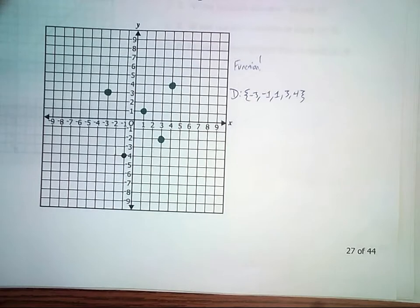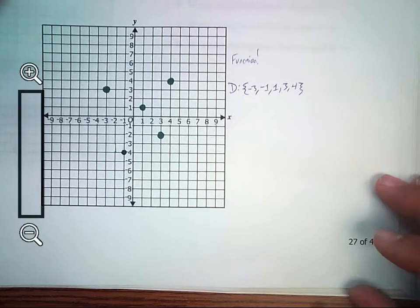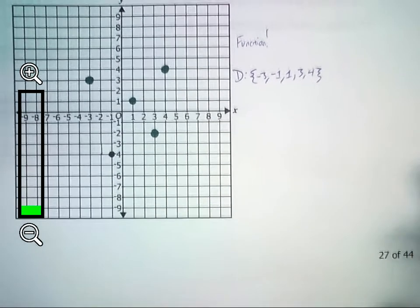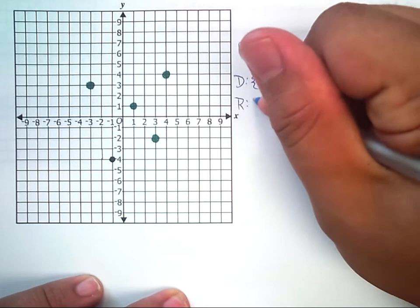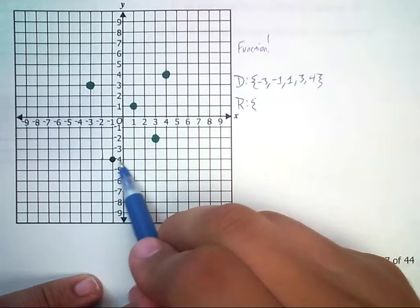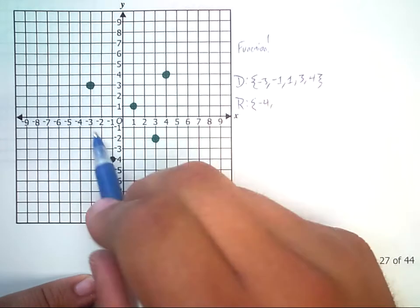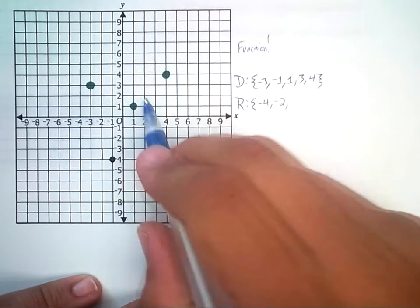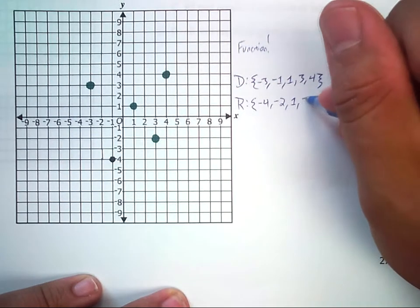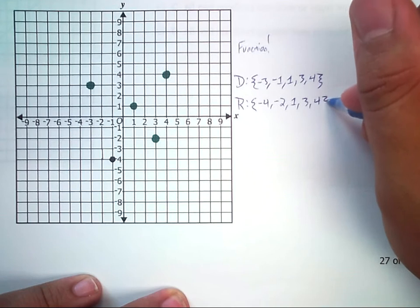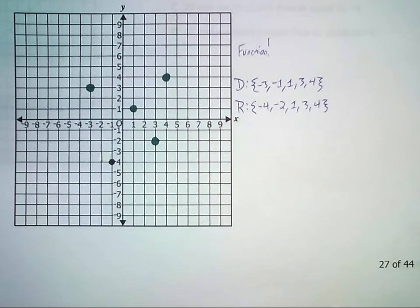With the ordered pairs, again, pretty straightforward, and all you've got to do is just list the values. So for range for this problem, we would do negative four, negative two, one, three and four. So it's actually pretty similar to the domain.